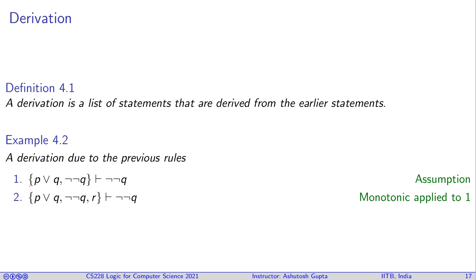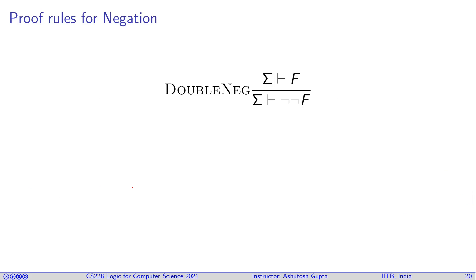In an example derivation, the first line is written because of the Assumption rule — since F is inside the set, we can derive it from the set. Next, we apply the Monotonicity rule to obtain that a bigger set can also prove the same formula. When applying Monotonicity, you must reference which prior line you are using; if you don't provide that reference, it is a wrong derivation and you will not receive points on exams.